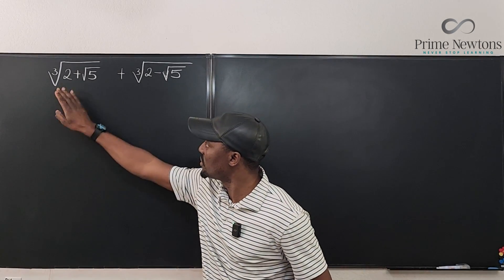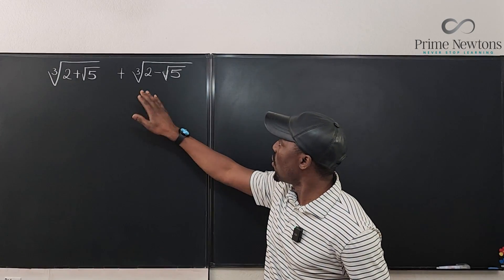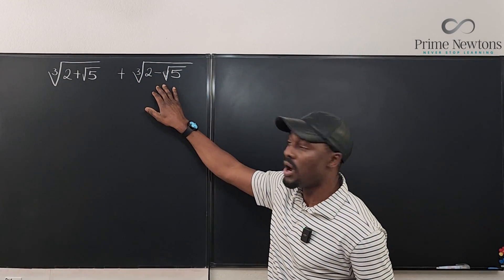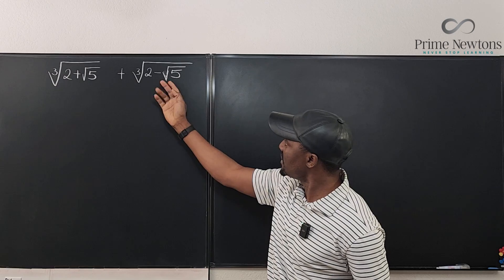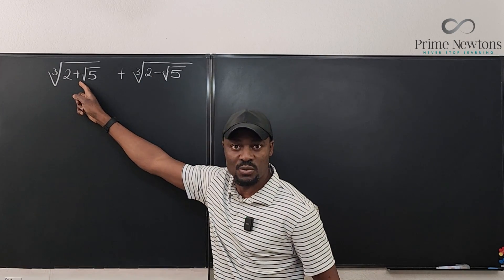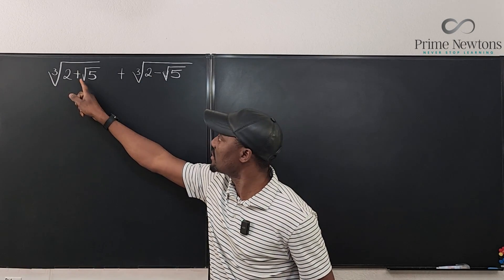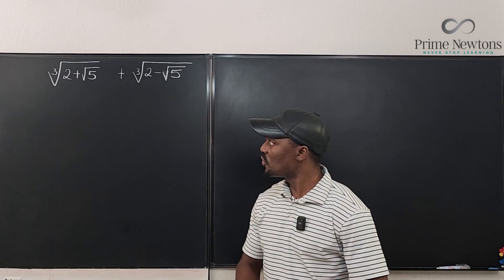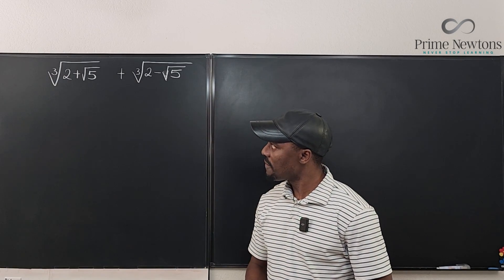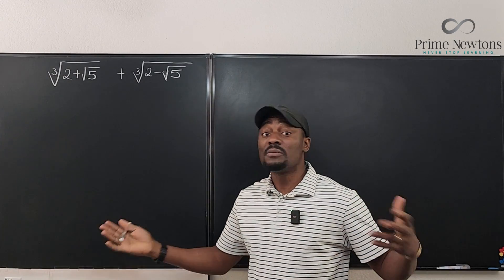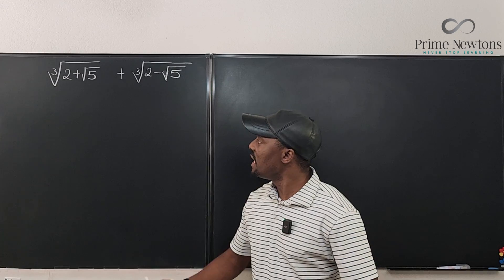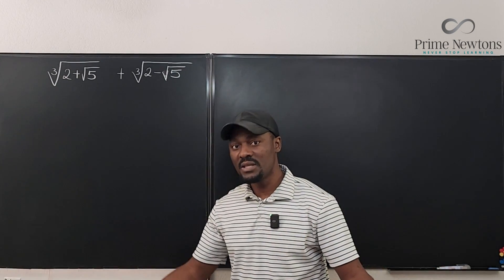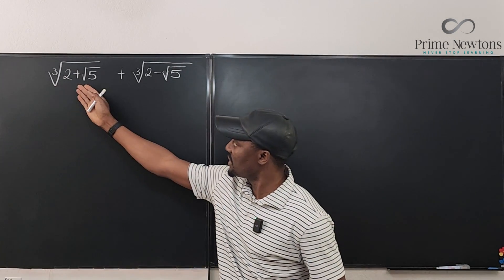This approach is a general one you should take whenever you have the cube root of a sum or a difference and you have conjugates under the radical sign. As you can see, this expression is the conjugate of the other because one has a plus and the other has a minus — that's the only difference. So we have to make a substitution: we'll give each part a name, and then we'll get our answer.